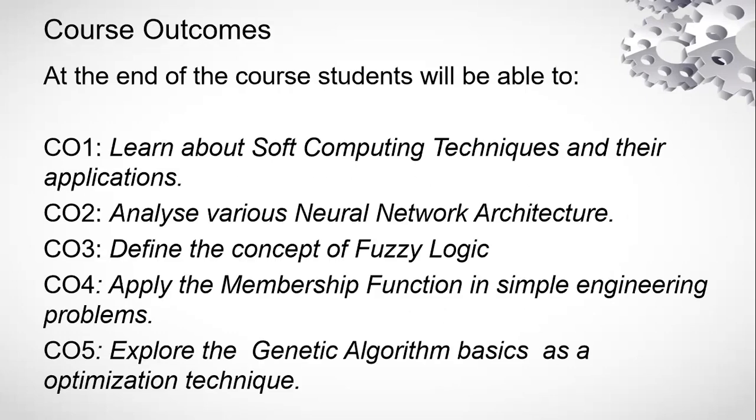So, now what are the outcomes of this course? I have prepared five outcomes based on each unit. Basically we have five units and we have five course outcomes. First unit, the first outcome is at the end of the course, the students will be able to learn about soft computing techniques and their applications. On the basis of neural network unit, the students will be able to analyze various neural network structures.